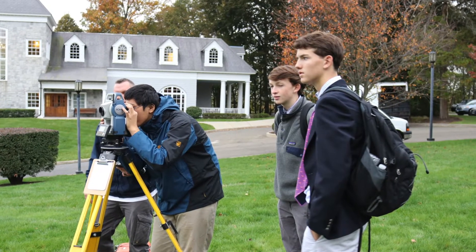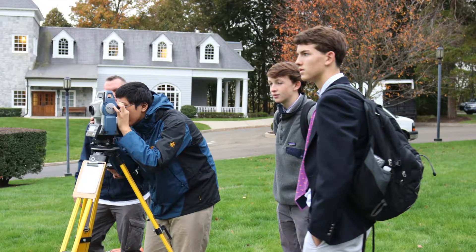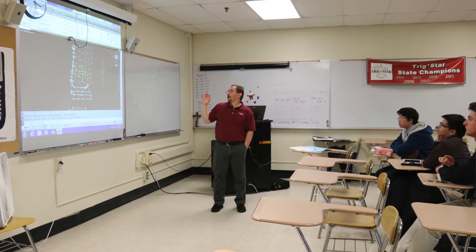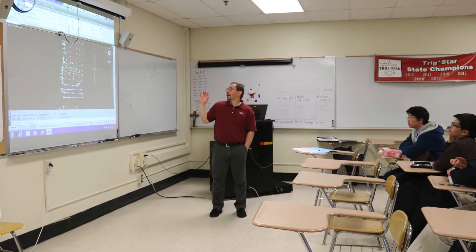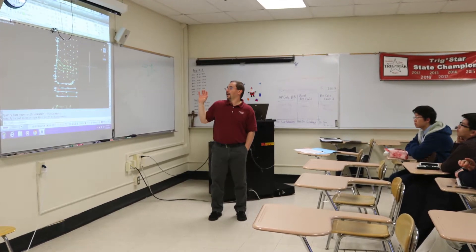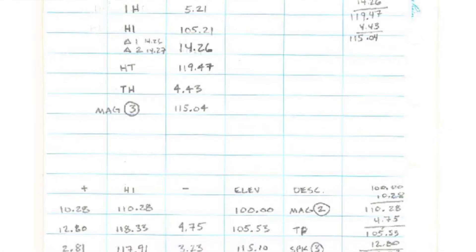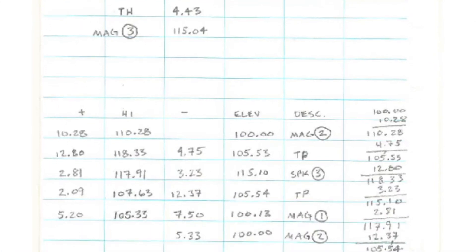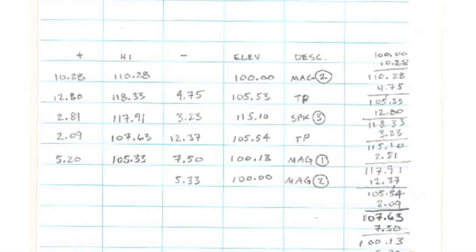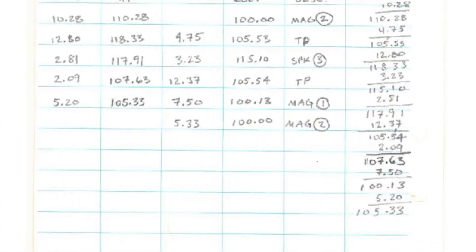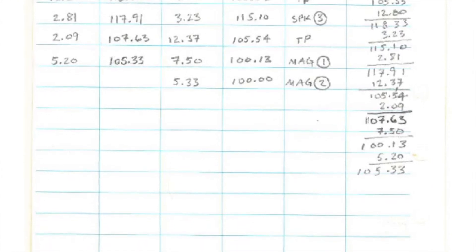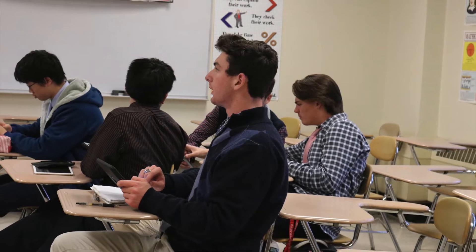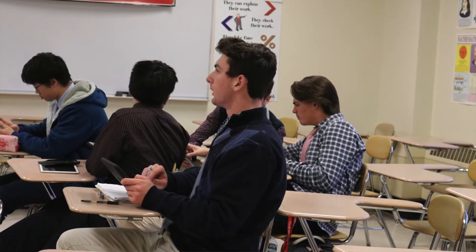Because those are known control points, we assign coordinates to them. And when we process it through our program, what it does is it takes all of this information out here and it computes what the coordinate and the elevation is for every single point that we collected. When we go through and process it, we go to Import in AutoCAD, and all of the points and all of the line work comes right in.